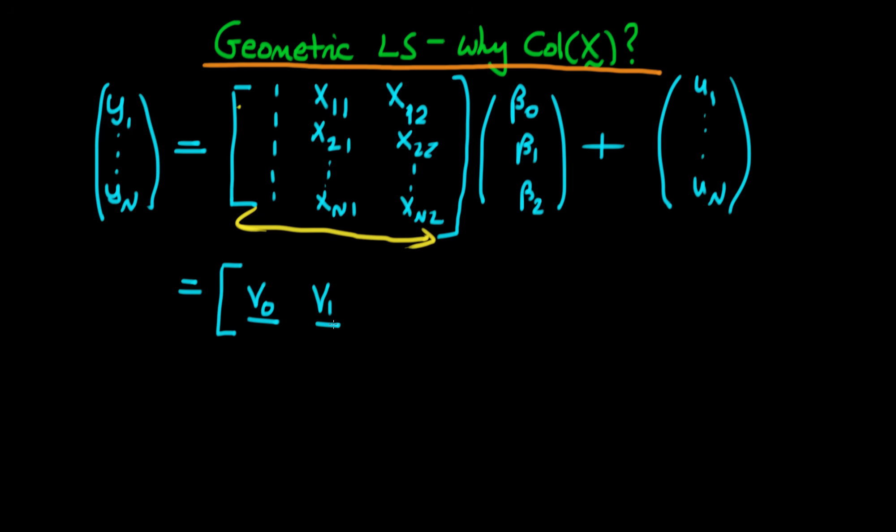The second vector, V1, is just the vector of the column which is all the observations of our first independent variable. And then the final vector is the vector which is this column here, which is the vector of the second independent variable observations.